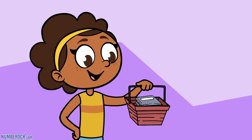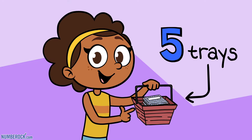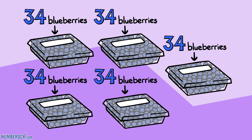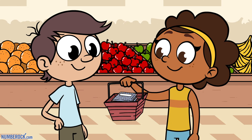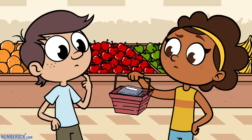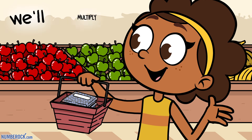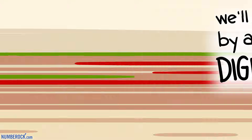In our basket, we had five trays of blueberries. The trays had 34 blueberries in each. We look at our basket — how many berries were in it to see? We'll multiply by a single digit.